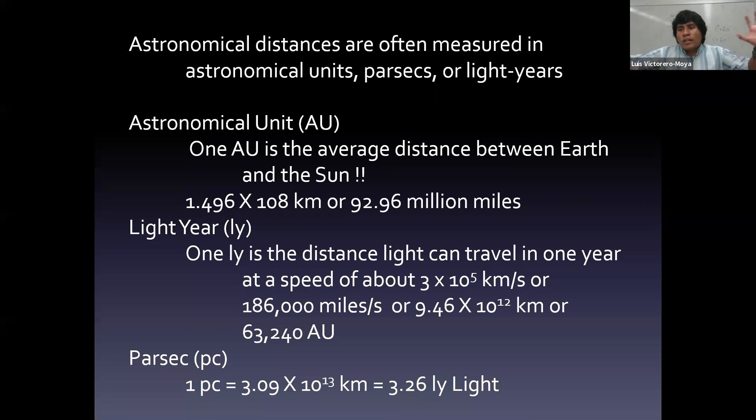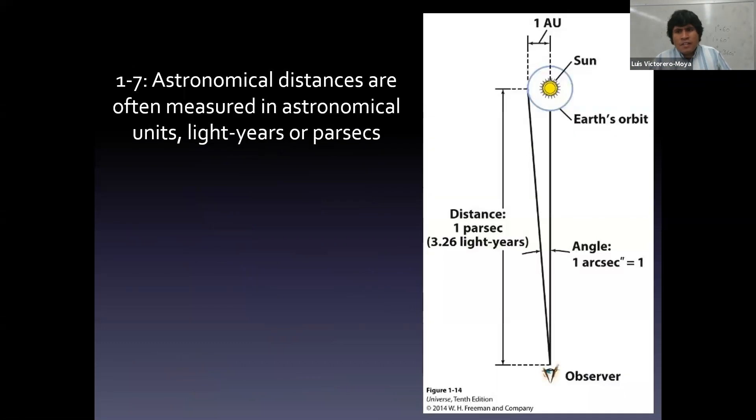However, as we explore the universe more and more, we need to go into a higher unit. And maybe later on, we will have to get another one when we start getting larger distances. So, we introduce the parsec. The idea with the parsec is very interesting. It's here. Imagine you are an observer and you move away, and you move away from the Earth orbit as it's showing in the picture, in such a way that the angle between the Earth and the sun, and I'm talking about the Earth orbit and the sun, is exactly one arc second.